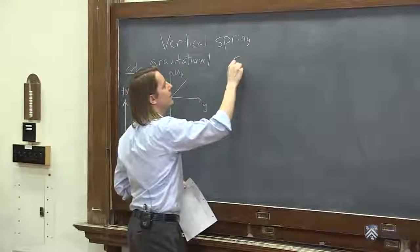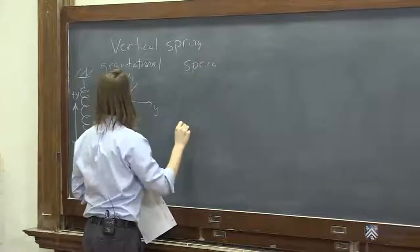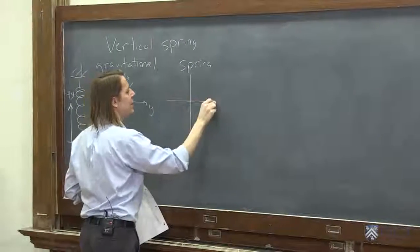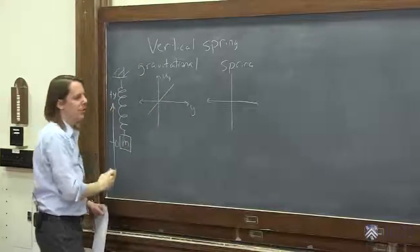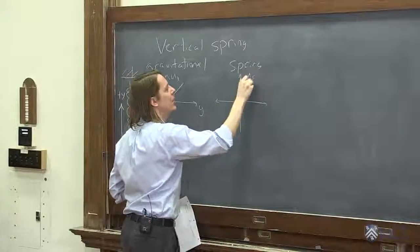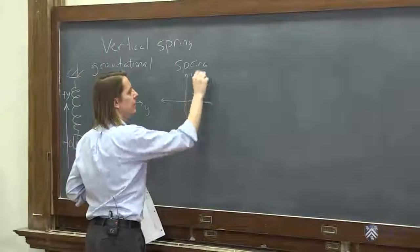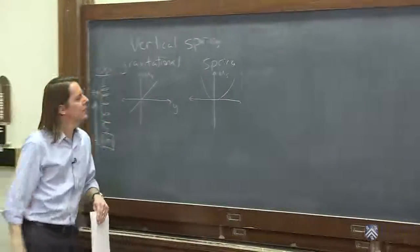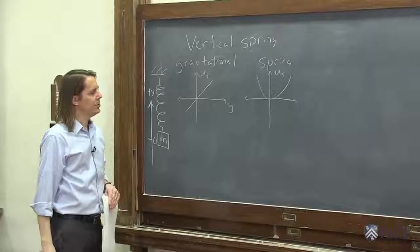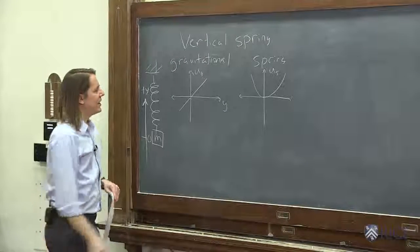Let's look at the spring. Spring we just did. It looks like this. If we're talking about y, compressing the spring up and down, and we wanted to plot Us, it would look like what we just drew. Like that. A little spring potential. And we can check it.